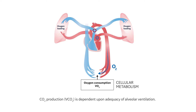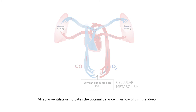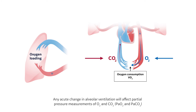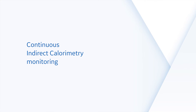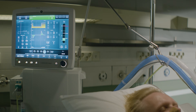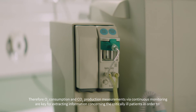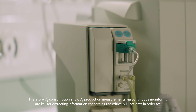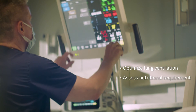CO2 production, VCO2, is dependent upon adequacy of alveolar ventilation. Alveolar ventilation indicates the optimal balance and air flow within the alveoli. Any acute change in alveolar ventilation will affect partial pressure measurements of O2 and CO2. Therefore, O2 consumption and CO2 production measurements via continuous monitoring are key for extracting information concerning the critically ill patient in order to optimize lung ventilation and assess nutritional requirements.